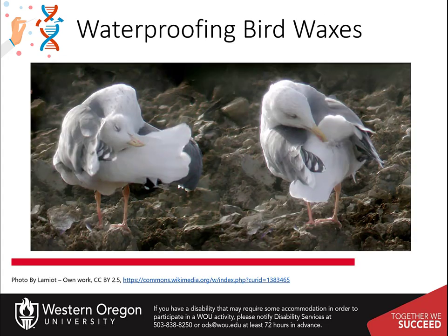Waxes can be found throughout the biological world in all kingdoms of life. In the example here, water birds such as Larus argentatus, shown here, maintain and waterproof their feathers by smoothing waxes produced by the uropygial gland located near the anus. These are called preen waxes.